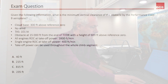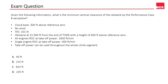So let's take a look. Given the following information, what is the minimum vertical clearance of the obstacle by the performance class B aeroplane? Cloud base is 300 feet above reference zero — reference zero means ground level. No wind, which means the TAS of 101 knots is also the ground speed. Obstacle at 15,000 feet from the end of the takeoff distance required, and height of 600 feet above reference zero. All engines rate of climb is 1,830 feet per minute and the single engine rate of climb is 400 feet per minute. Tick of power can be used throughout the whole climb segment. The answer options are: 40 feet, 215 feet, 815 feet, 235 feet. Two of these options are widely different from the other two.